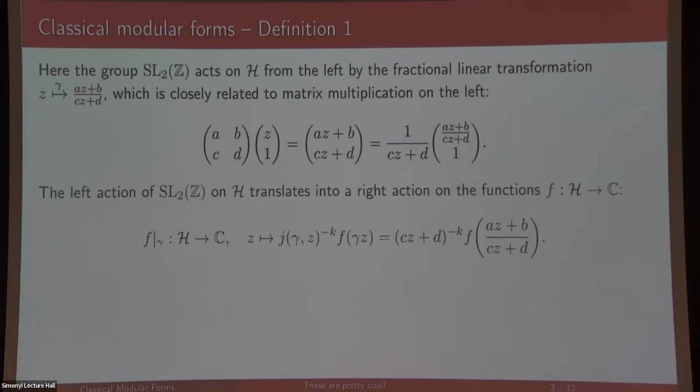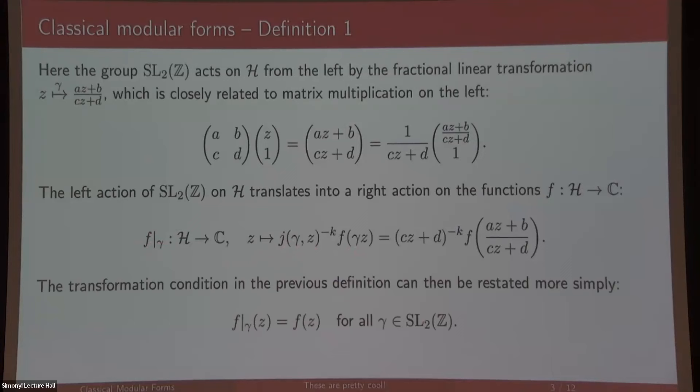This is just a different way of writing the action of SL₂(Z) on the upper half plane and how that second condition can be rephrased in terms of slash operators, where f slash gamma is this factor of automorphy times f of gamma z. So that second condition can be written saying that f slashed with any matrix gamma should just stay the same. It's symmetric in a certain way, and this is a group action on the set of functions on the upper half plane.